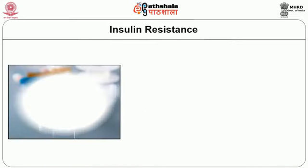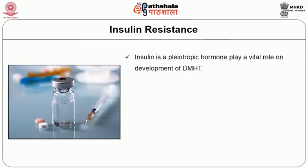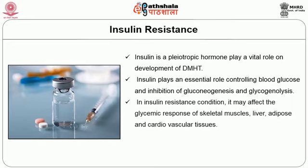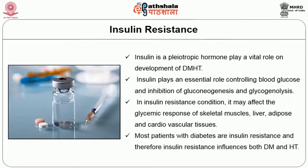The third factor is insulin resistance. Insulin is a pleiotropic hormone which plays a vital role in the development of diabetes mellitus and hypertension. Insulin plays an essential role controlling blood glucose and inhibition of gluconeogenesis and glycogenolysis. In insulin resistance, it may affect the glycemic response of skeletal muscles, liver, adipose, and cardiovascular tissues. Most patients with diabetes are insulin resistant, and therefore insulin resistance influences both diabetes mellitus and hypertension.